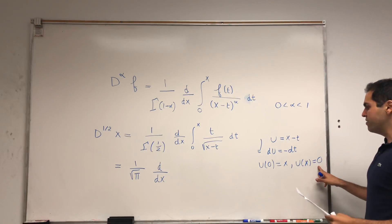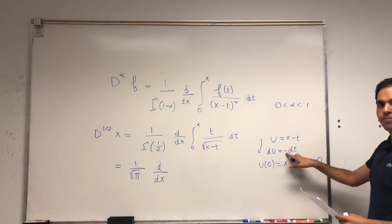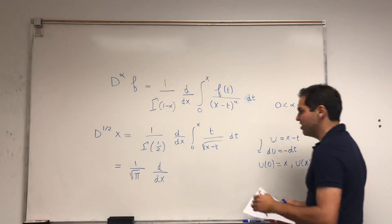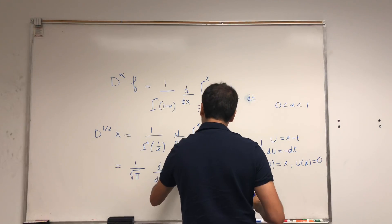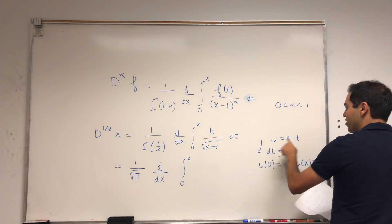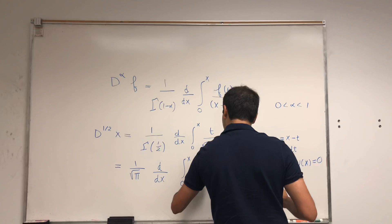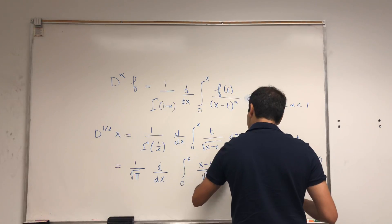So it's the integral from x to zero of whatever, but because of this minus sign, it puts it in the correct order. So it still becomes integral from zero to x. t becomes x minus u, and then the denominator is square root of u, du.